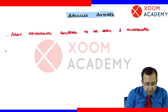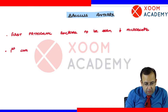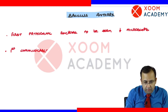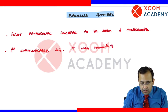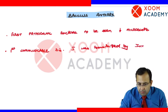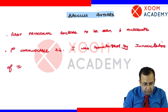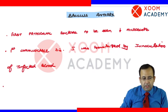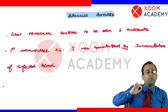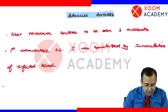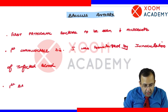Anthrax was also the first communicable disease which was transmitted by inoculation of infected blood. The infected blood was given to a patient, and as a result that patient got the disease. So it was the first communicable disease transmitted by inoculation of infected blood.